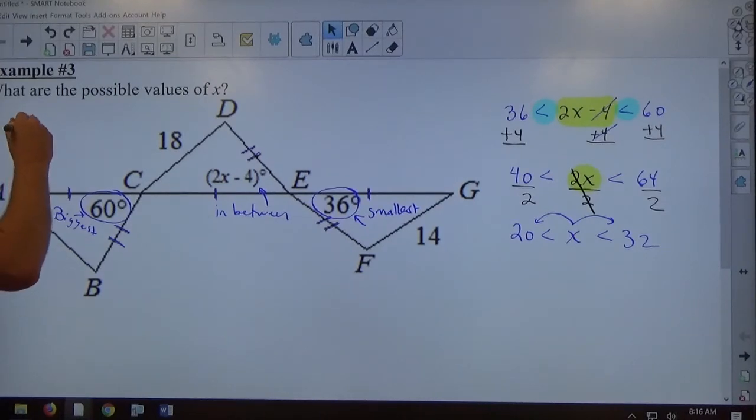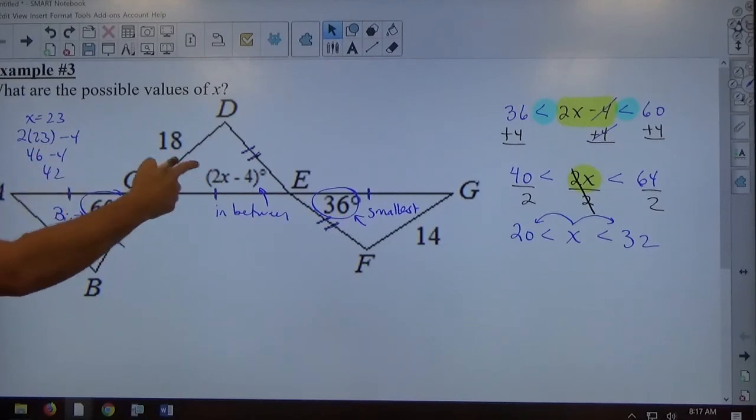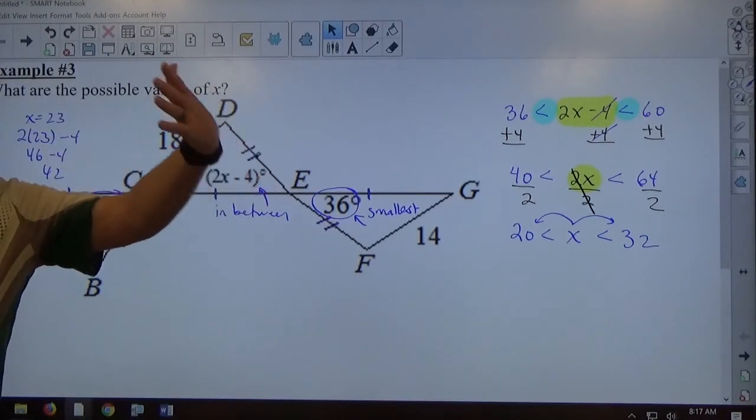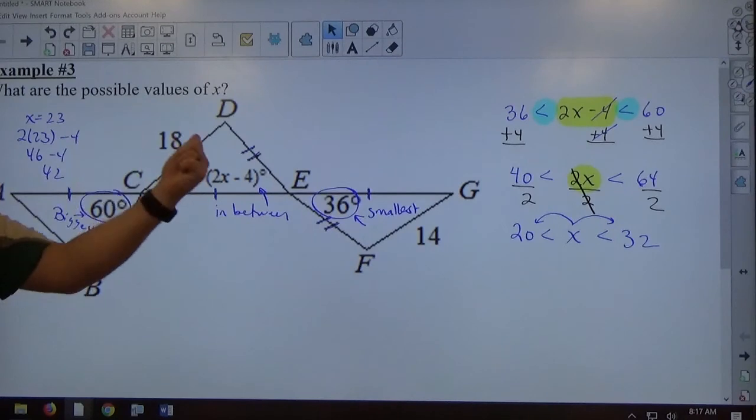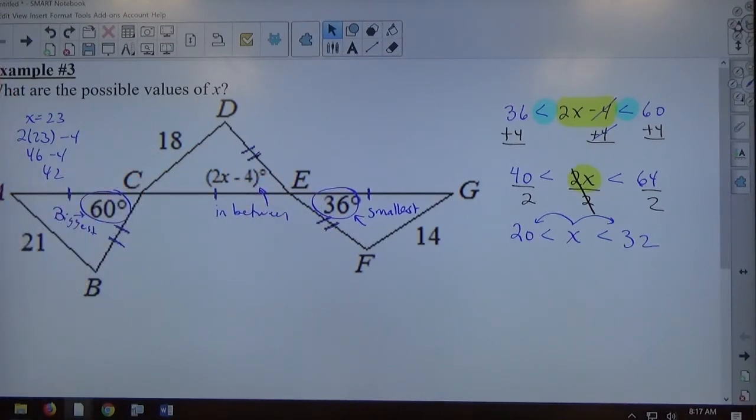So if x equals 23, 2 times 23 minus 4 is 46 minus 4, which is 42, which is a valid possible angle measure for angle DEC, right? So that's all we're doing there is we're establishing this is where x can be in order to make this angle correct based on the measure of these two angles.